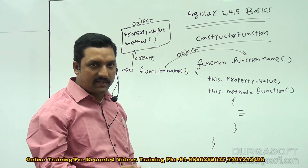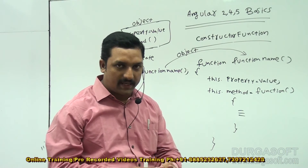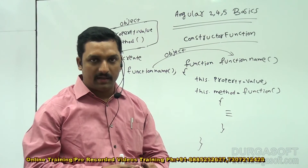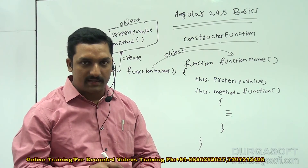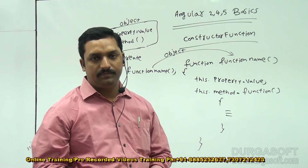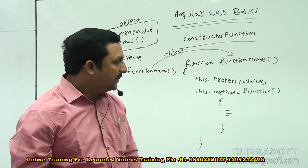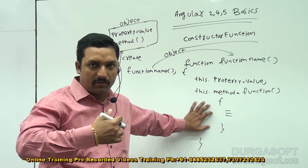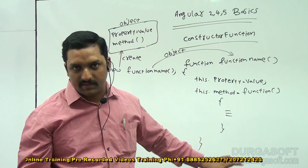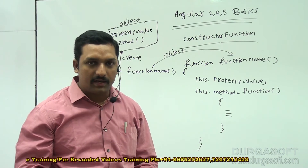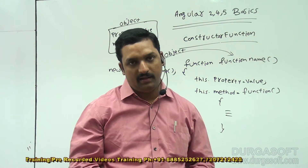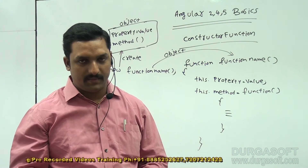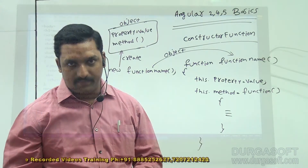I have given an example of student details — student ID, name, marks, email address — all these are properties. Methods are manipulations: calculation of total marks, calculation of average marks, calculation of grade, calculation of GPA — all these are examples of methods. Now let us see the program.